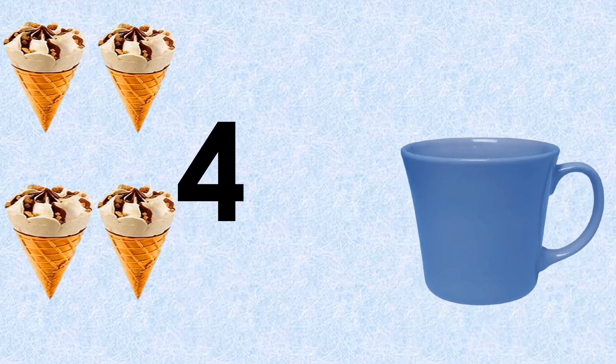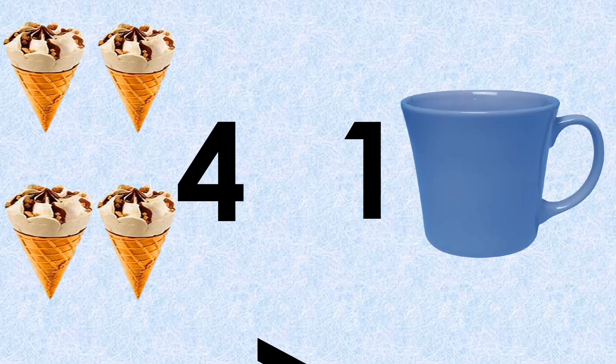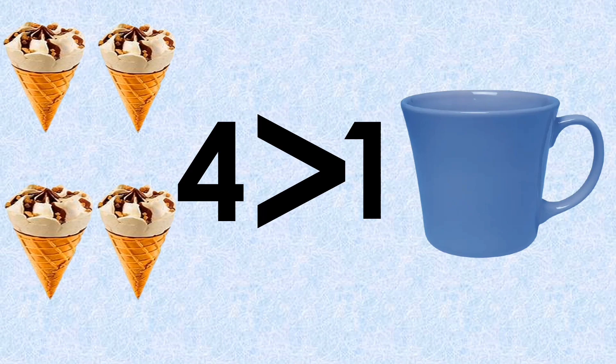Number of ice creams: four. On the other side, number of cups: one. Which number is bigger? Yes, four. We will put the greater than sign. How we will read? Four is greater than one.